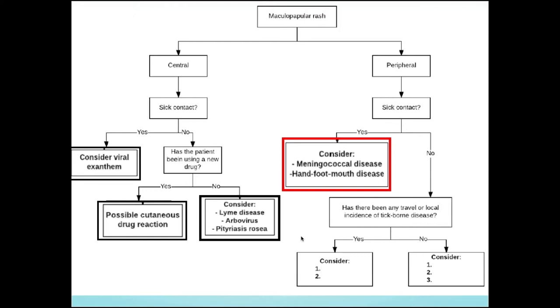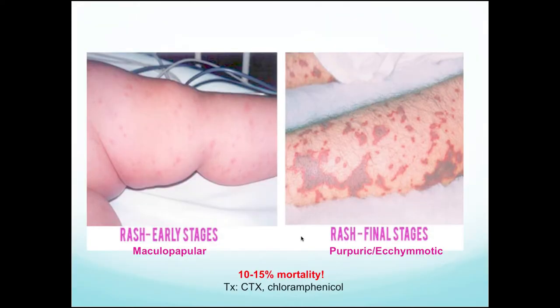Now for peripheral lesions - though some can occur centrally - think meningococcal disease and hand, foot, and mouth, especially in patients with sick contacts. One thing to note: when we think of meningococcal disease, we think petechiae and peripheral only, but the initial rash could actually look like a viral exanthem - a maculopapular rash to start. These patients will present toxic-appearing with fever, and if there's meningeal involvement, nausea, headache, vomiting, and very high fevers. Treat early with ceftriaxone or chloramphenicol if allergic.